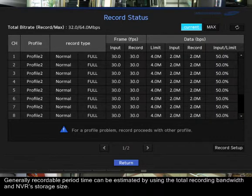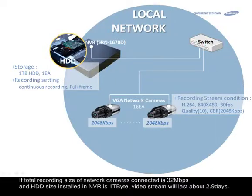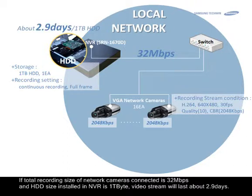Generally, the recordable period time can be estimated by using the total recording bandwidth and the NVR's storage size. If the total recording size of the connected network cameras is 32 megabits and the HDD size installed in the NVR is 1 terabyte, the video stream will last for about 2.9 days.